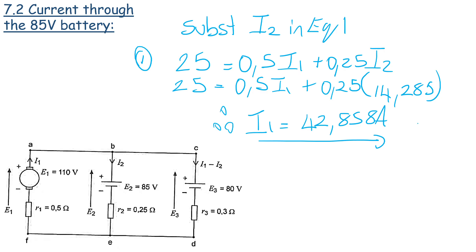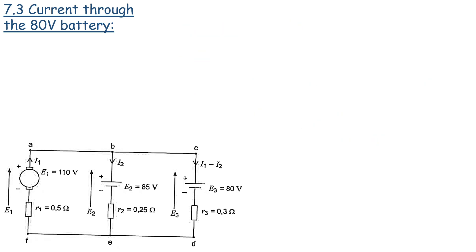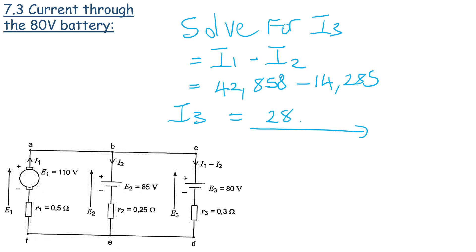Okay, now that we've got I1 and I2, we can solve for I3. You will notice that it is equal to I1 minus I2. So all we do is we substitute I1 is 42.858 minus I2 which is 14.285. So therefore, the third battery, in other words, the current through the third battery is going to be 28.573 amps.